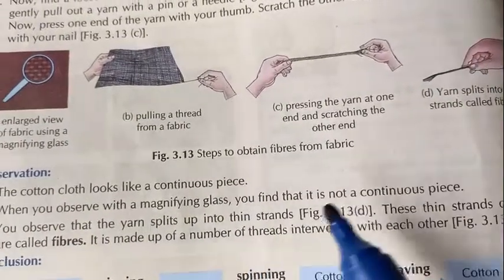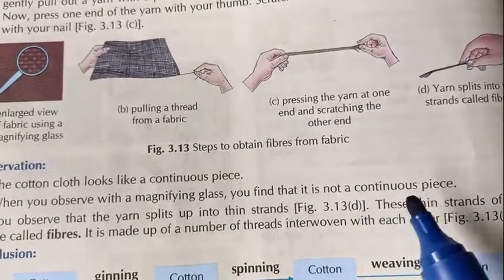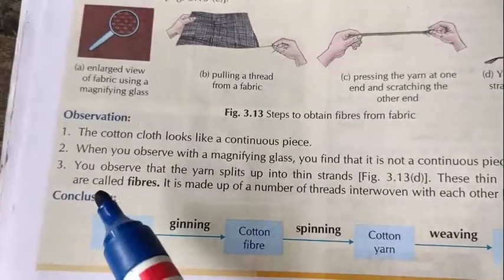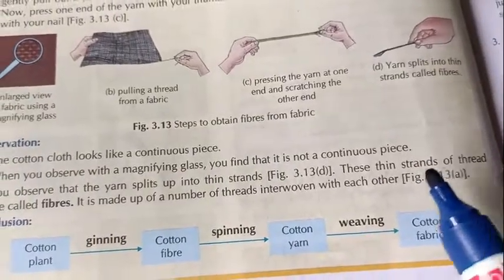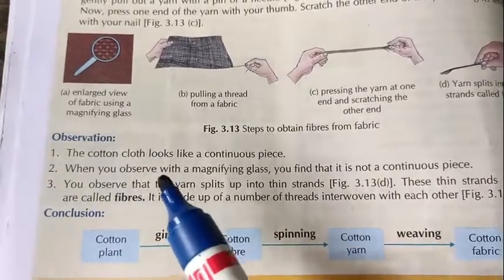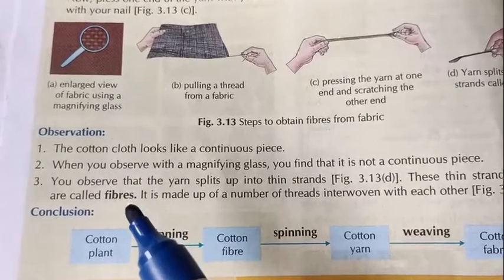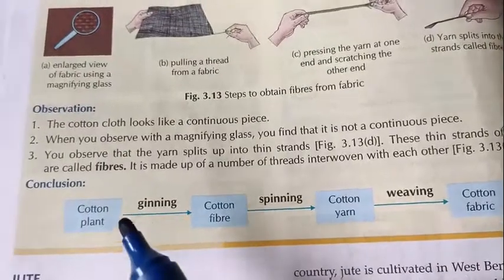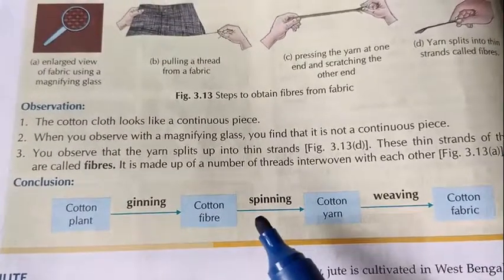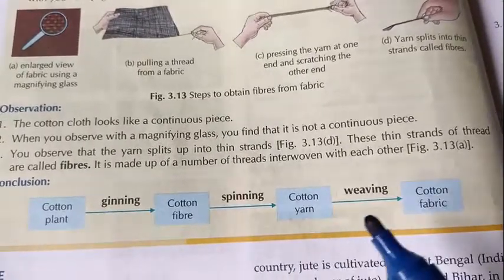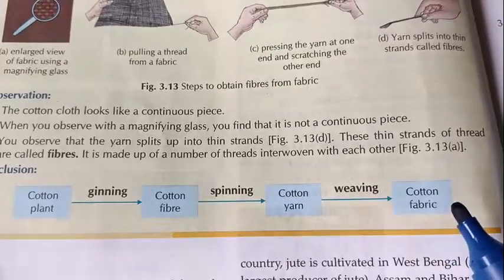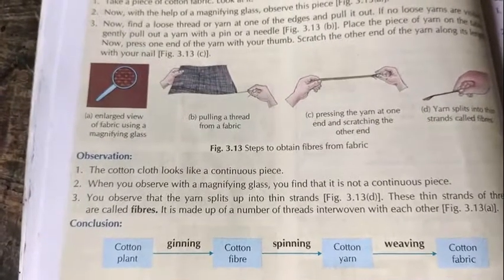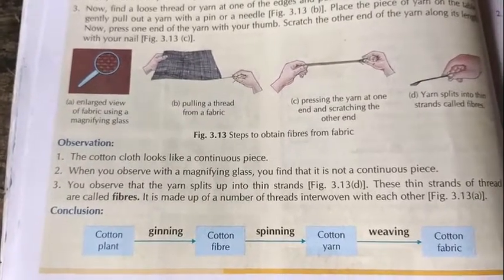When you observe through the magnifying glass, you find the yarn splits into thin strands — these thin strands of thread are called fibers. So fabric is made from different fibers, made up of a number of threads interwoven with each other. Our conclusion: cotton plant → ginning → cotton fiber → spinning → cotton yarn → weaving → cotton fabric. This is all about fiber to fabric. We will meet in the next video. Thank you.